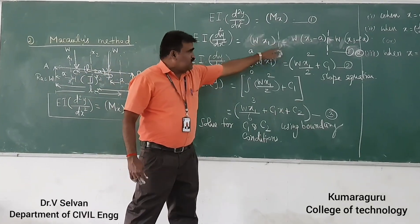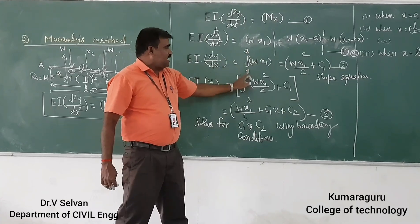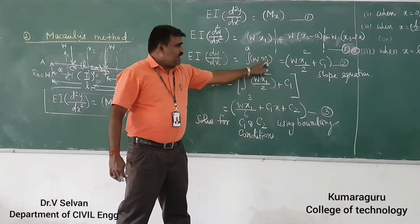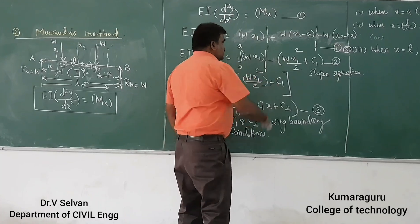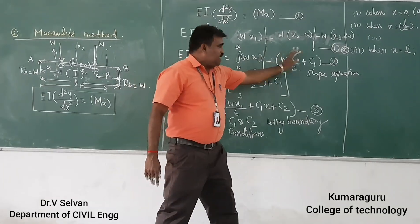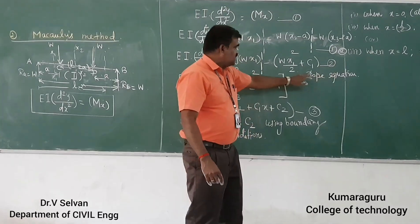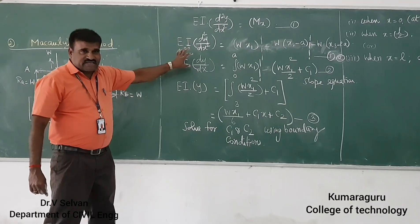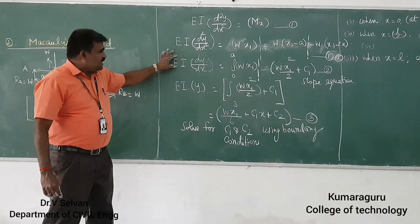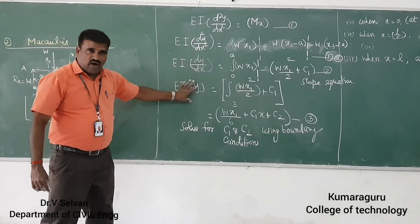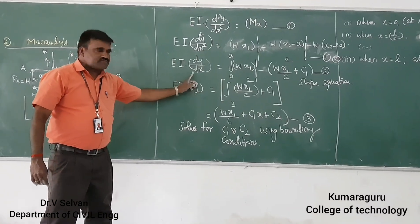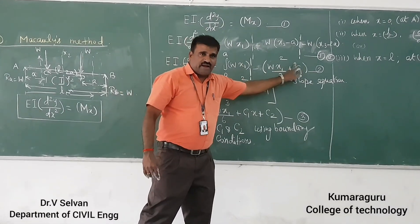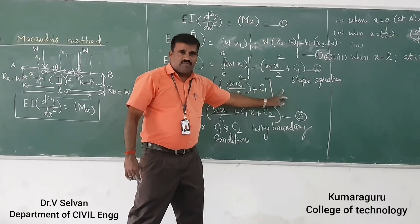Integrating once more, you get EI·y, the deflection equation. So integrating the slope equation again gives you the deflection y, which is the deflection of the beam at position x. That is the deflection equation, with one more constant of integration C2. I call this equation 3.